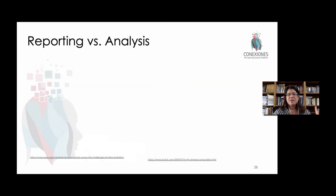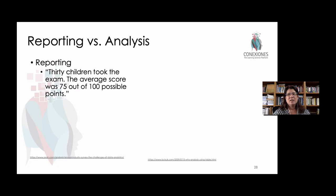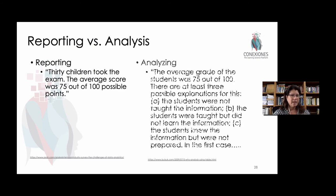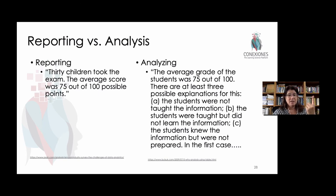Let's move on to reporting versus analysis. This is really the biggest problem that we have within student writing — students will tend to report. They'll say things like, '30 children took the exam, the average score was 75 out of 100.' That's reporting the data. Different from analyzing, which is: 'The average grade of the students was 75 out of 100. There are at least three possible explanations for this — the students were not taught the information, the students were taught but they didn't learn, or the students knew the information but they weren't prepared for that test.' And then you go into why each of those three things would be possibilities.